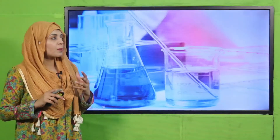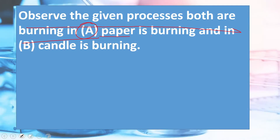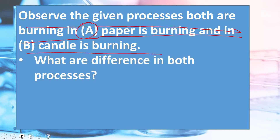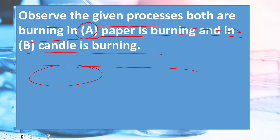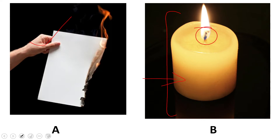Observe the given processes: in A, paper is burning, and in B, candle is burning. What are the differences between both processes? Burning of paper is a chemical change because the paper is turning into ash and smoke. Whereas in the candle, both chemical and physical changes are occurring. The wick undergoes a chemical change, whereas the candle wax undergoes a physical change, because no new product is formed from the wax.